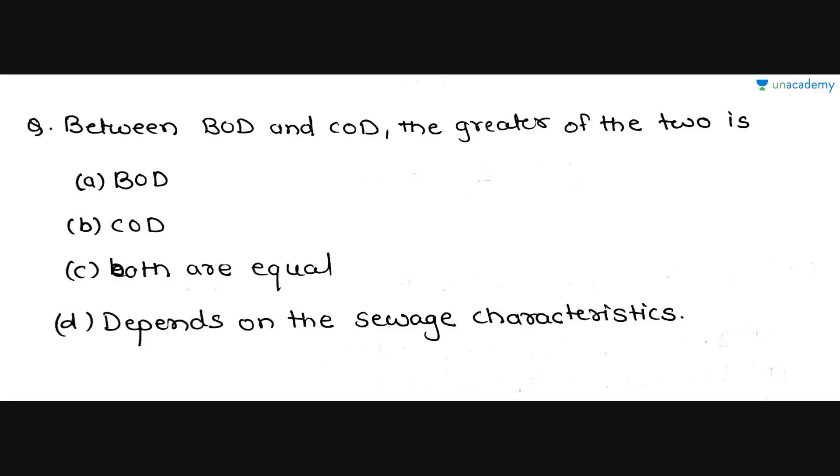Next question is, between BOD and COD, the greater of the two is: option A is BOD, option B is COD, option C is both are equal and option D is depends on the sewage characteristics. For this, you must know the relation between the BOD and COD. COD represents both biological active and inactive organic matter, whereas BOD gives only biological active organic matter only. Therefore, COD is greater than BOD. Between BOD and COD, the greater of the two is COD, as I said. COD represents both biological active and inactive organic matter, whereas BOD gives biological active organic matter only. Therefore, COD is greater than BOD. So option B is the correct option for this question.